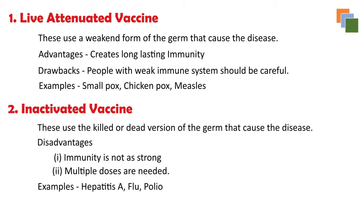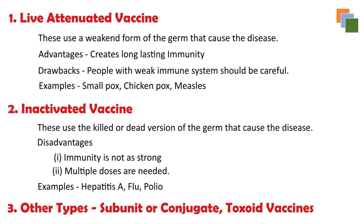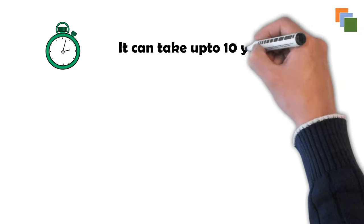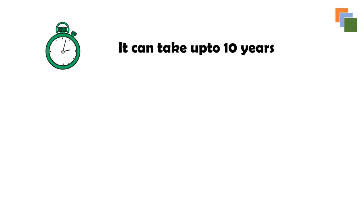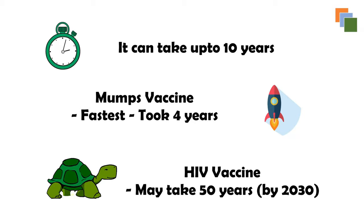Other than these two major types, there are also vaccines that use only part of the germ, referred to as subunit or conjugate vaccines, as well as toxoid vaccines. Studies show that it can take up to 10 years for a vaccine to be ready and available for public use. The fastest vaccine ever created was the mumps vaccine, which took four years. The HIV vaccine, on the other hand, is still not ready and is believed it will be available by 2030 — making it a 50-year development timeline.